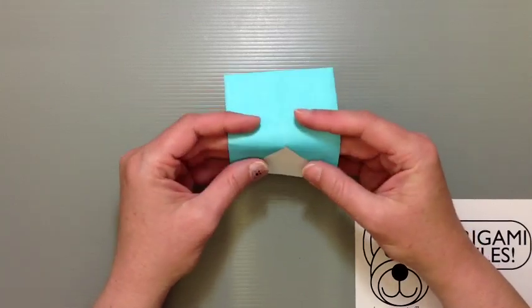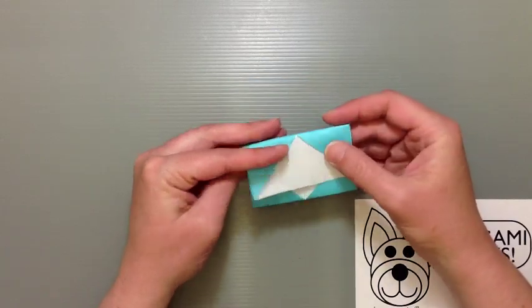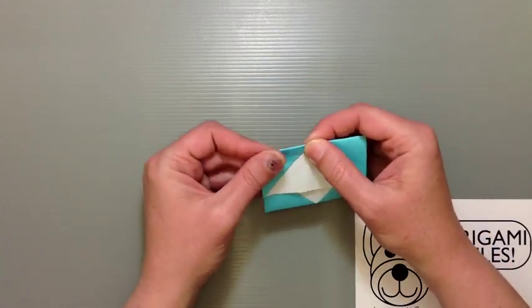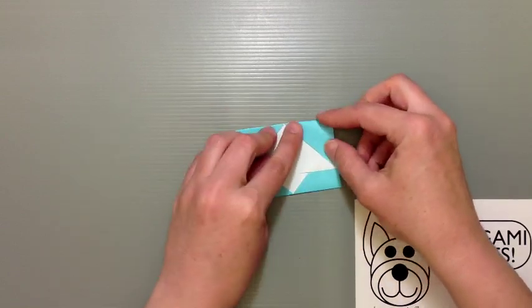And then we're just going to be doing the same thing with this side, bringing it back as well. So you can flip it over and see what things are looking like. Make sure that that crease gets lined up the way it needs to there. Get the centers going too.